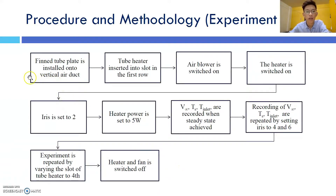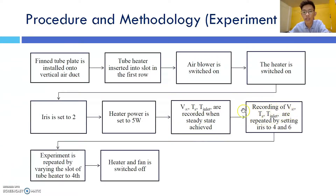For Experiment 20C, the fin tube plate is installed onto the vertical air duct and the tube heater is inserted into the slot in the first row. The air blower and heater are switched on. The iris is set to 2 and the heater power is set to 5W. These three variables are recorded when steady state is achieved, then repeated with the iris set to 4 and 6. The experiment is then repeated by varying the tube heater slot to the fourth row. When complete, the heater and fans are switched off.